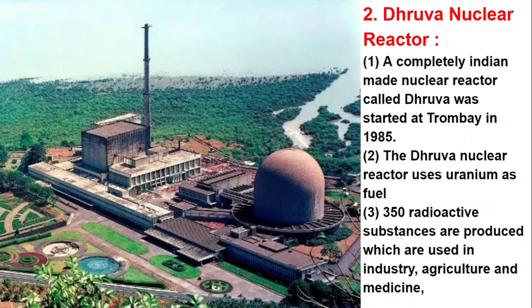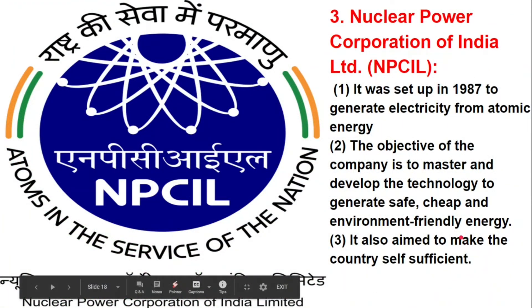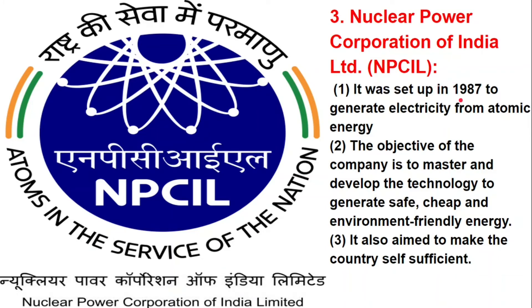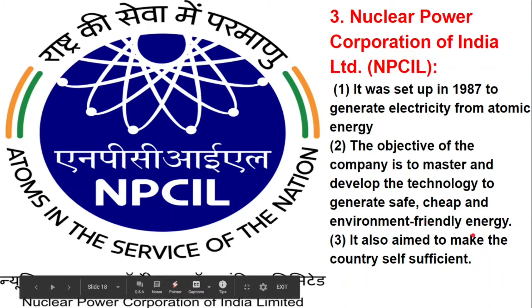Dhruva in Indian mythology is a prince blessed to eternal existence and glory as the pole star — Dhruva Nakshatra in Sanskrit — by Lord Vishnu. It can also mean simply the pole star or 'ultimate' in Sanskrit. The Nuclear Power Corporation of India Limited (NPCIL) was set up in 1987 to generate electricity from atomic energy. The objective of the company is to master and develop the technology to generate safe, cheap, and environment-friendly energy, and to make the country self-sufficient.